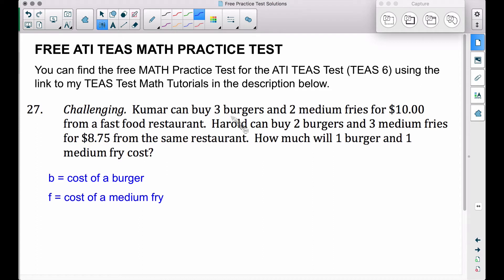Looking back at this first sentence, three burgers. So if we take three times the cost of a hamburger, B is the cost of a hamburger. So three times the cost of a hamburger will be the total cost for three hamburgers, but he's also getting two medium fries. So plus 2f, two orders of medium fries times f, the cost of a medium fry. This total is $10 according to that first sentence that we have here by Kumar.